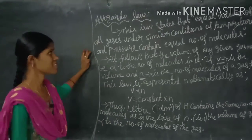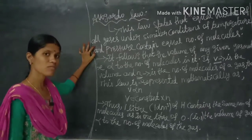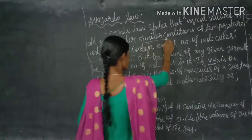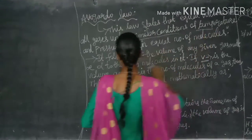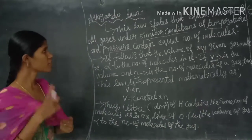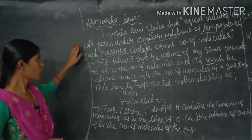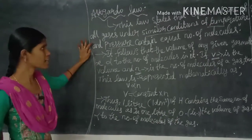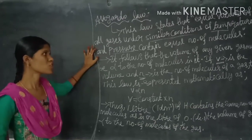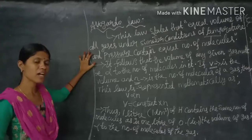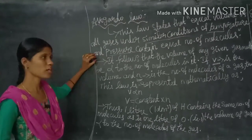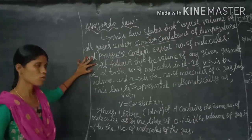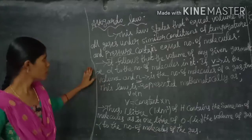Avogadro's law states that equal volumes of all gases under similar conditions of temperature and pressure contain equal numbers of molecules. Similar conditions means standard temperature and pressure (STP): temperature is constant at 273 Kelvin and pressure is constant at one atmospheric pressure. Under these conditions, the gases contain equal numbers of molecules.